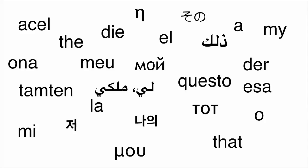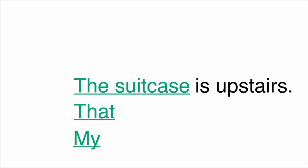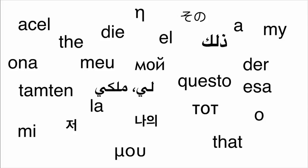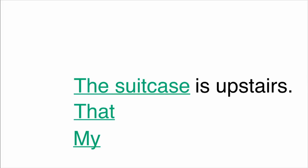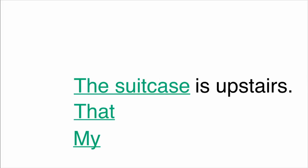So in English, with 'the', 'that', and 'my', we can say things like 'the suitcase is upstairs' — meaning not just an abstract idea of a suitcase, but a particular one that I expect you to be familiar with. I can say 'that suitcase is upstairs', meaning a particular one at a certain distance. And I can say 'my suitcase is upstairs', meaning a particular one that I possess. But in English, I could not say 'suitcase is upstairs' — we need a determiner for the sentence to work.